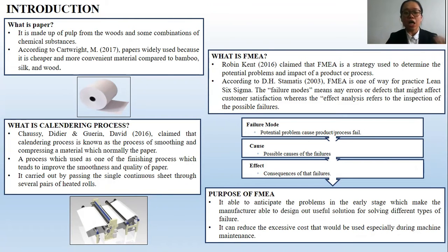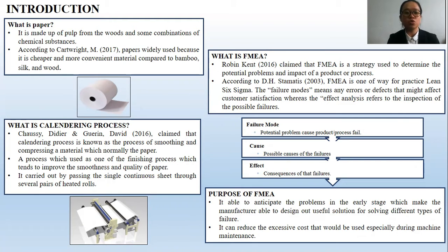What is the calendering process? The calendering process is one of the paper manufacturing processes that is used to improve or increase the smoothness or glossy level of the paper. Basically, this process is normally carried out by passing a single continuous sheet through steel pads or heated rollers.